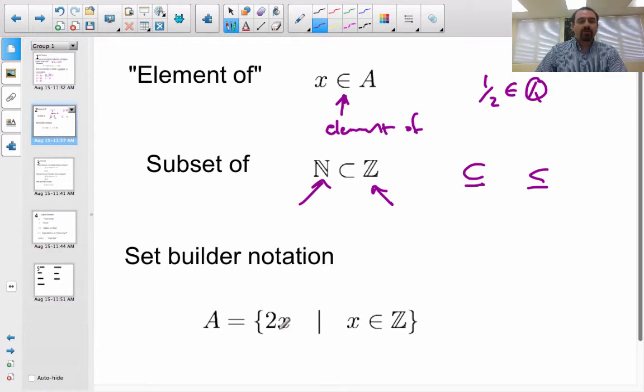Set builder notation, you've probably seen this as well. A can be defined, a set can be defined as some kind of algebraic operation, perhaps, on an element from another set. So, for instance, this set is all the numbers that are 2 times X if X is an integer. So, another way of writing the even numbers.